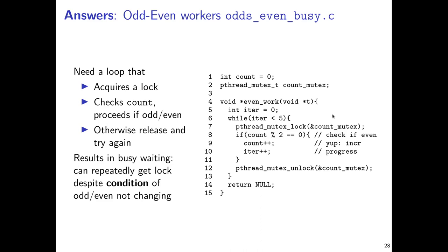The general code setup involves a loop locking a mutex called count_mutex associated with the variable. Taking the even worker as an example, it increments a global variable five times total, tracked by a local iteration count. While iteration count is less than five, it locks the mutex, checks if the value is even, increments both the count and iteration counter, then unlocks. If the value is odd, it doesn't increment, unlocks, and loops back around. This works fine and doesn't take too long to run.